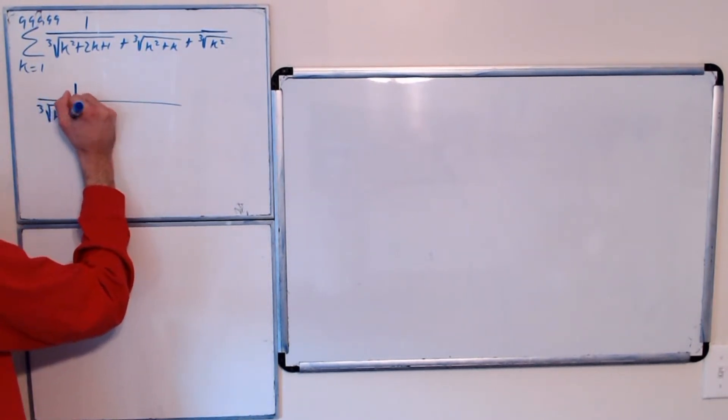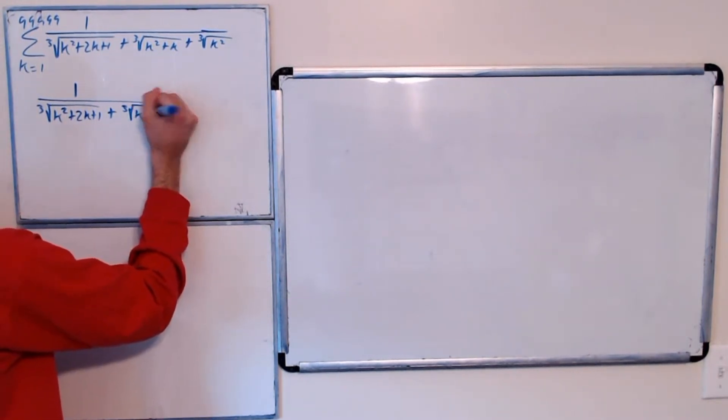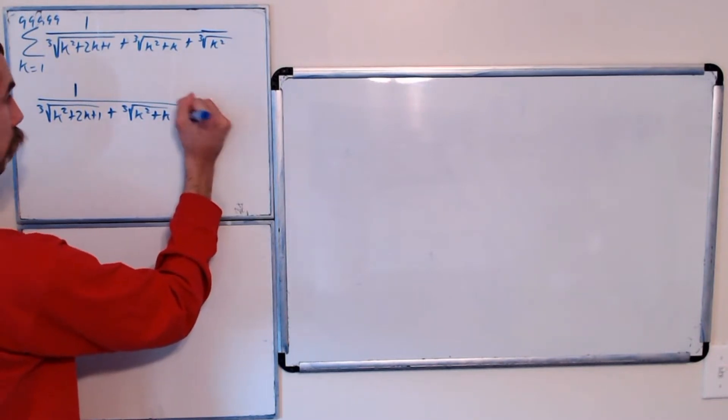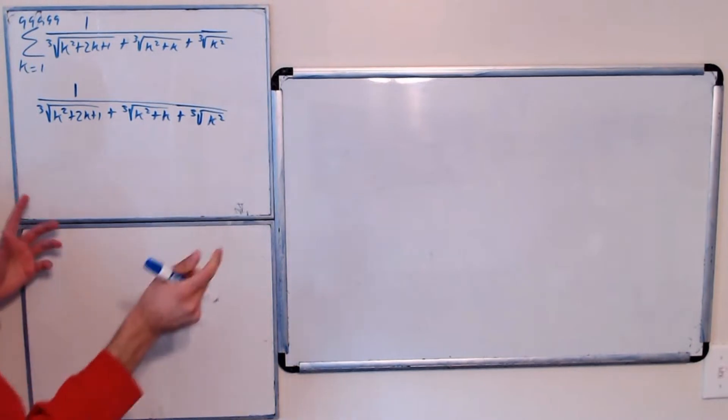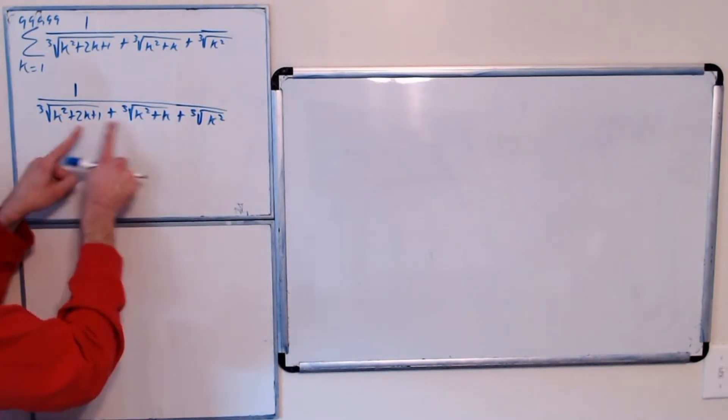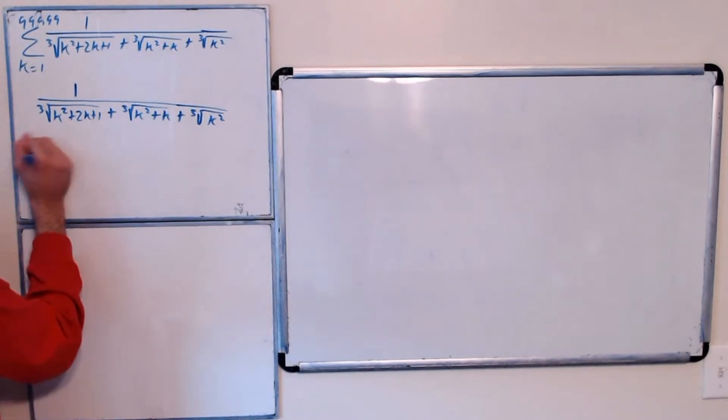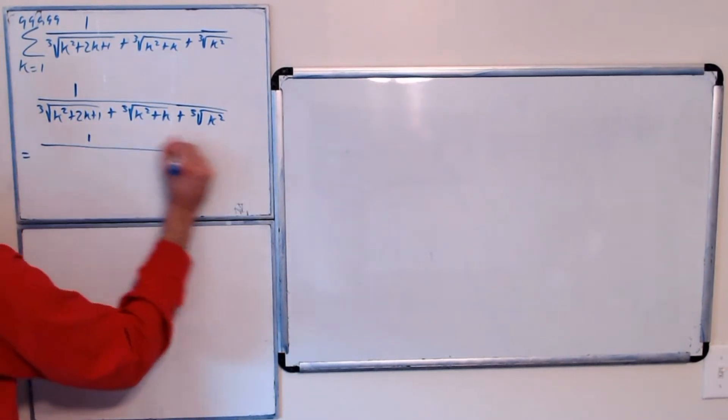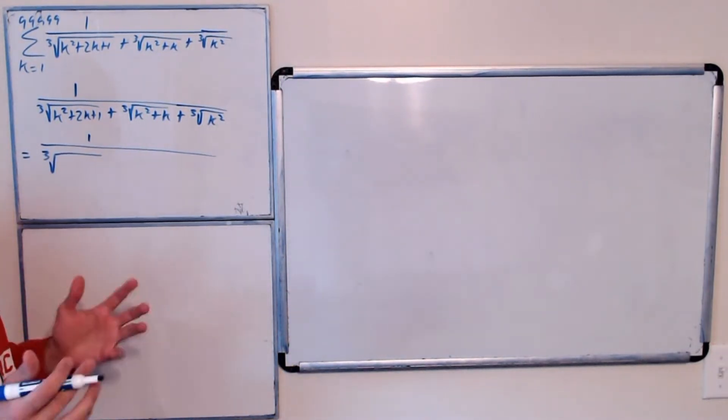So it's the cubed root of k squared plus 2k plus 1 plus the cubed root of k squared plus k plus the cubed root of k squared. Now notice we can factor this, and this is just k squared. So this is equal to 1 over the cubed root of, well, k squared plus 2k plus 1 is k plus 1 squared.